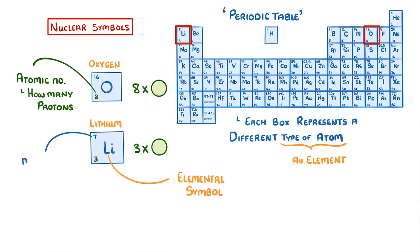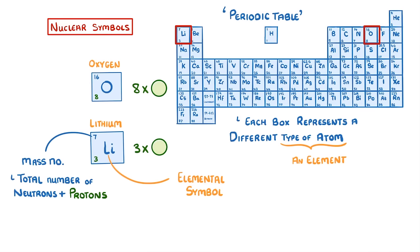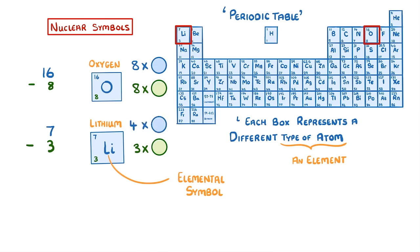Lastly, in the top left we have the mass number, which tells us the total number of neutrons and protons in that atom. So if we wanted to find out how many neutrons oxygen has, we would do the mass number minus the atomic number, which in this case would be 16 minus 8. So it has eight neutrons. The number of neutrons an atom has isn't always the same as the number of protons though. For example, lithium has a mass number of seven. So to find the number of neutrons lithium has, we would do 7 minus 3, which equals 4. So lithium has 4 neutrons, even though it only has 3 protons.